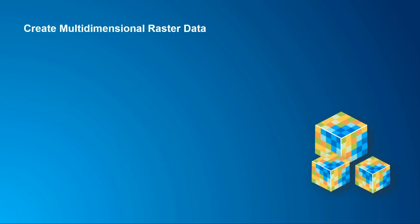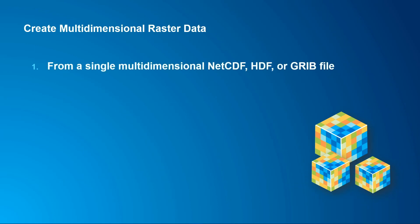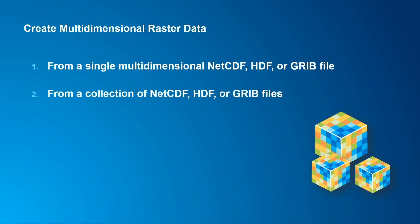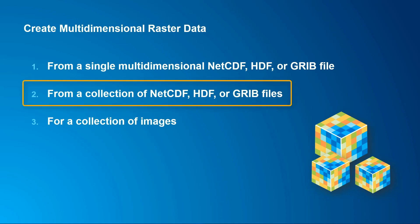There are three main ways to create multi-dimensional raster data. The first is from a single netCDF, HDF, or GRIB file. The next is from a collection of those types of data files. And the third is from a stack of images or rasters that have been collected over time.